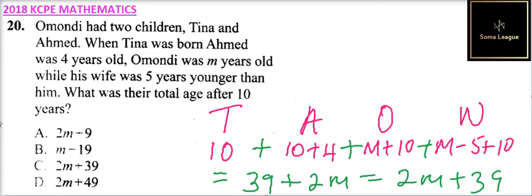Checking our answer: A is not true, B is wrong, C is correct, D is wrong. So the correct answer is C, and that is how you get the answer to that question.